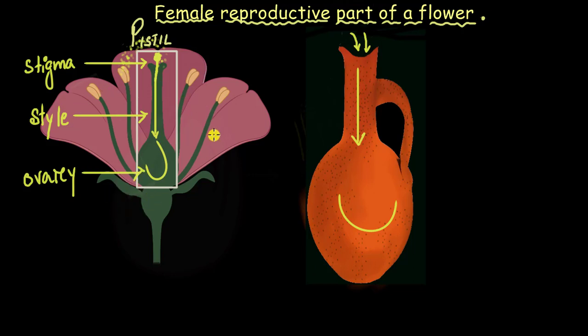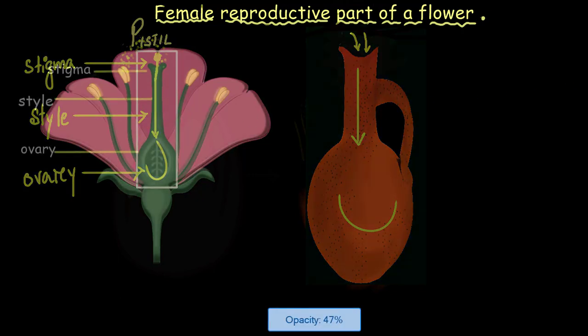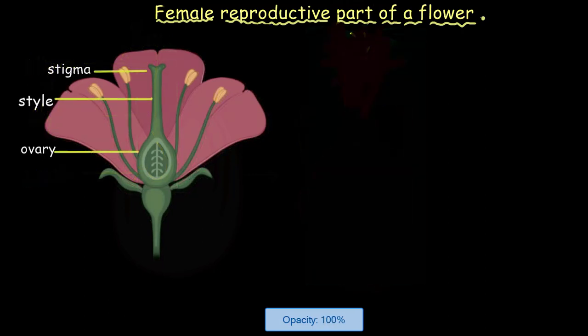This is all about how the pistil or the female reproductive part looks from the outside. Now we also need to look what is on the inside of the pistil. So let's zoom in to the inner side of the pistil. If you have a closer look at this ovary area, you will see that there are small lobe-like structures attached to a stalk-like thing. These small lobes are nothing but the homes in which the female gamete will start growing.